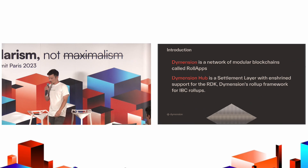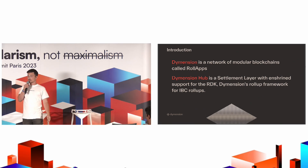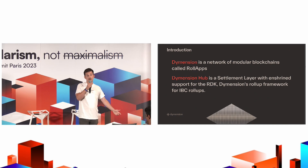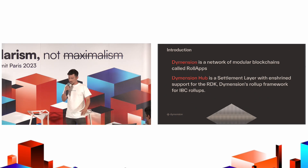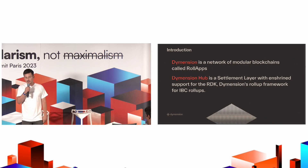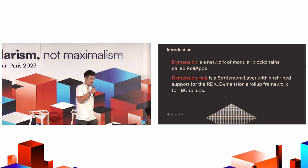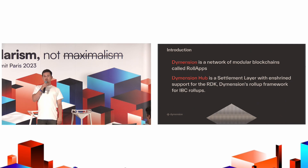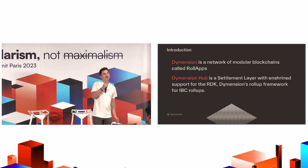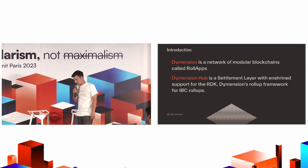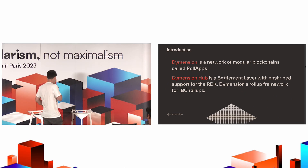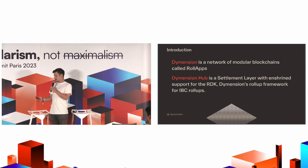Dymension has a very unique architecture — probably the only settlement layer that focuses on modular settlement and a validating bridge for rollups. The difference between Dymension and Ethereum in terms of settlement is that Dymension doesn't use smart contracts for rollups. It actually uses the chain itself to support these rollups and to gain more decentralization for sequencers from day one.